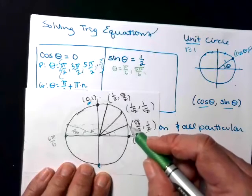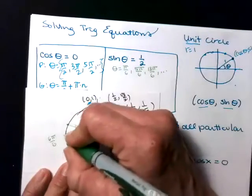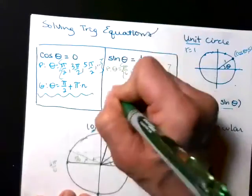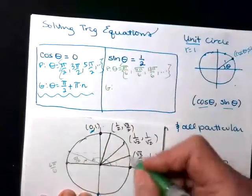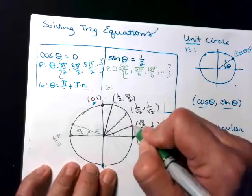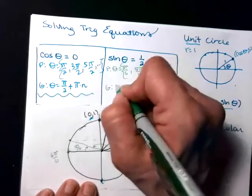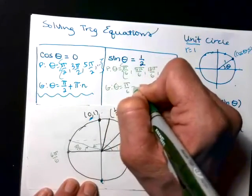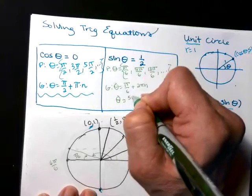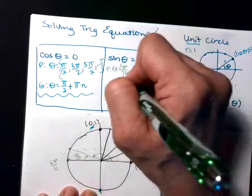You can keep going: pi sixths, five pi sixths, come back around, pass 12 pi sixths, and the next would be 13 pi sixths. These would be our particular solutions. For the general solution, I need to write it in two separate parts because it's not just pi each time. Theta equals pi sixths plus 2pi n, and theta equals five pi sixths plus 2pi n.